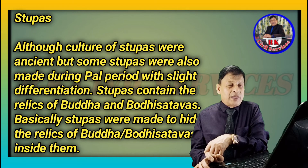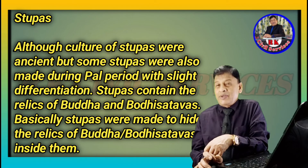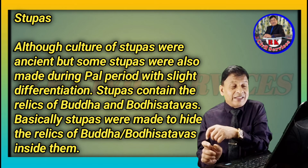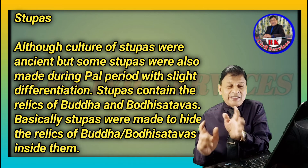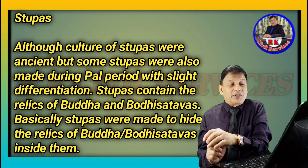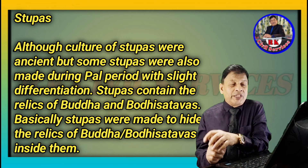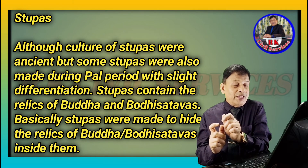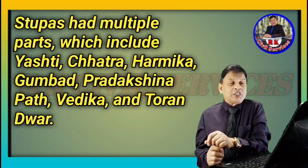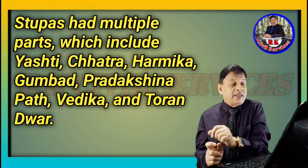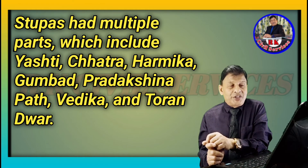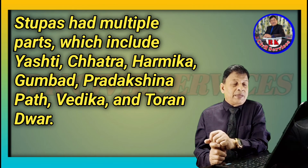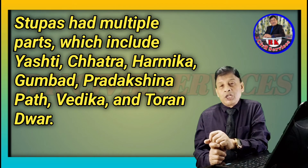Stupas — the culture of stupa construction was ancient, but stupas were also made during the Pala period with slight differentiation. Stupas contain the relics of Buddha and Bodhisattvas; they were made to hide the relics of Buddha or Bodhisattva inside them. Stupas have multiple parts including Ashti, Kshatra, Hermic, Gumbad, Rakshinga, Path, Venika, and Torana Dwar.